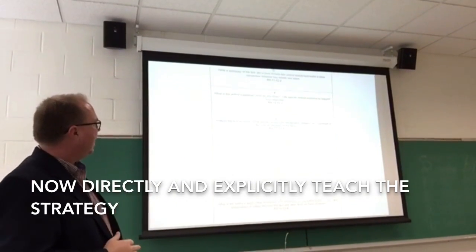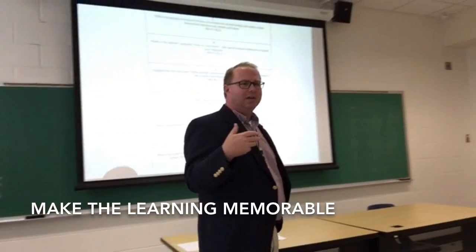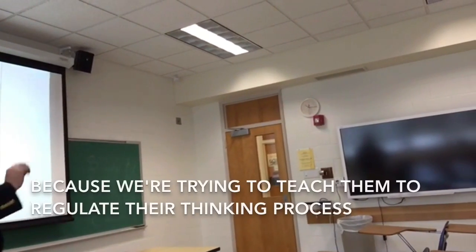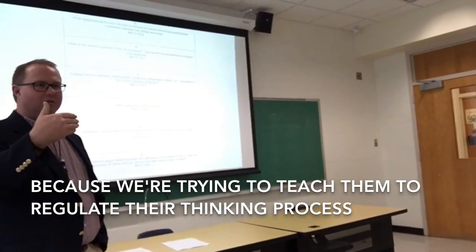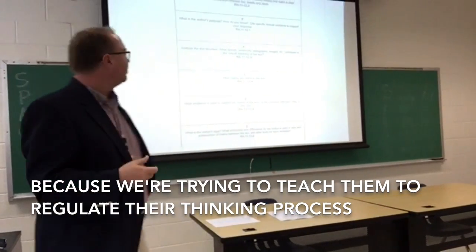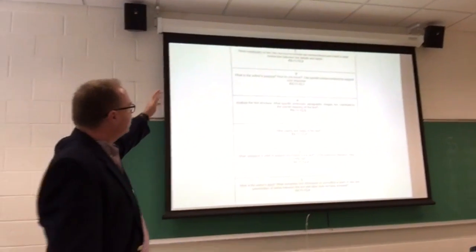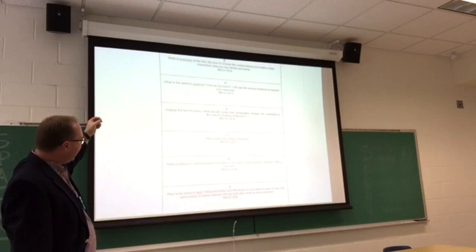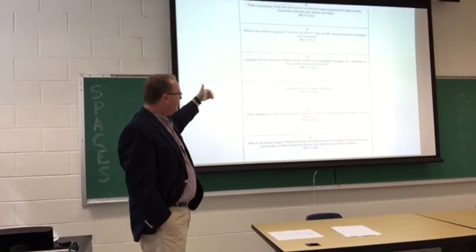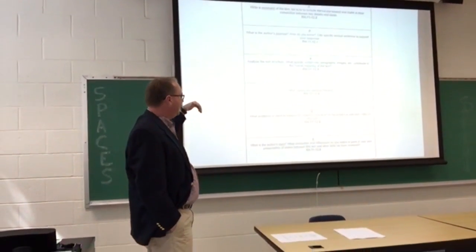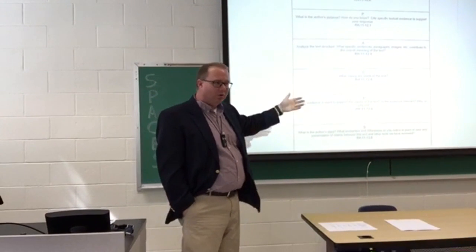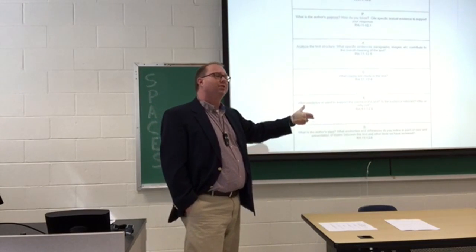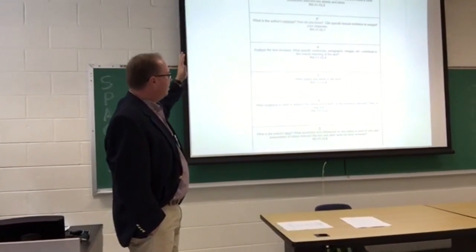SPACES is just a little acronym we came up with to help you remember — and that's something I like to do, share things that are memorable so you can use them later. The idea is that anytime you look at something in history, you're going to utilize this strategy to understand what the document, image, or text is trying to tell you. SPACES means: first, we write a Summary of the text looking for its central idea; we identify the author's Purpose; we Analyze the way the text is written; we look at the Claims made; we look at the Evidence used to support those claims; and we discuss the author's Slant, angle, or bias. All of these pieces together paint a picture as to why the author is doing what they're doing and why the document is important.